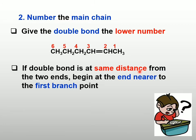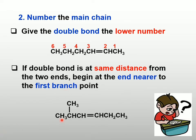If the double bond is at the same distance from both ends, we will begin at the end which is nearer to the first branch. For example, if I start from the left, the double bond is on carbon 3 and 4. If I start from the right, the double bond is also on carbon 3 and 4. But from the left, it is nearer to my first branch. So I will start numbering from the left, which gives my branch the lower number.